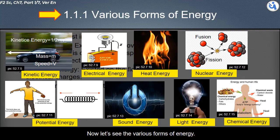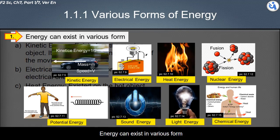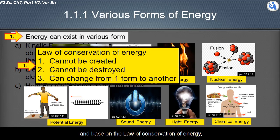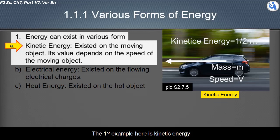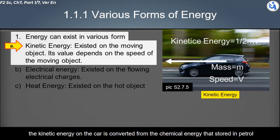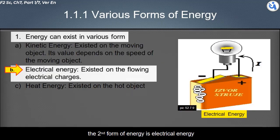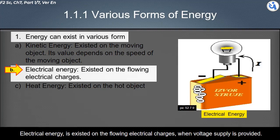Energy can exist in various forms. Based on the law of conservation of energy, these forms of energy can change from one form to another. The first example is kinetic energy. Kinetic energy only exists on moving objects. The kinetic energy of a car is converted from the chemical energy stored in petrol; objects that remain idle have no kinetic energy.